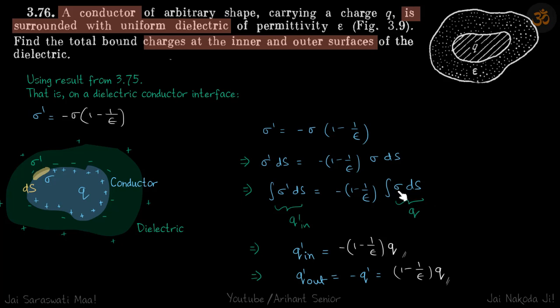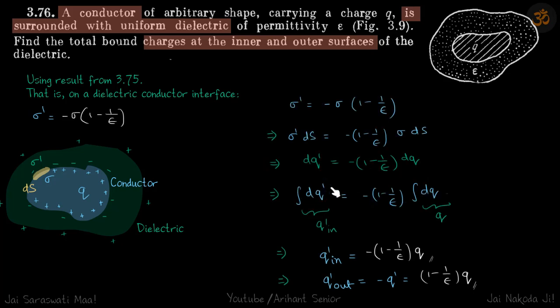Charge density into small area. This charge density is at that area only. So, this integral of dq dash, let me write one more step. Now it will be more clear. Sigma dash ds is the small charge on the dielectric side and sigma ds is the small charge on the conductor side.